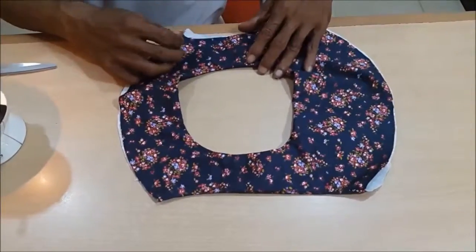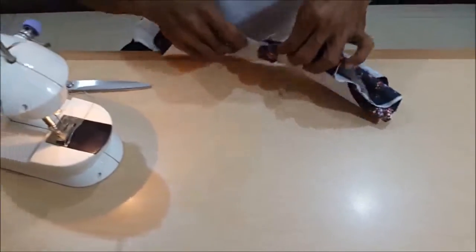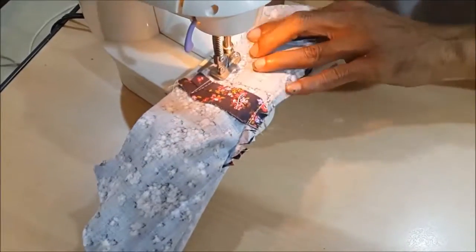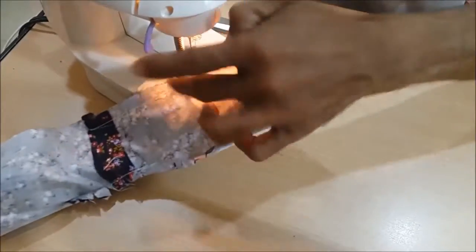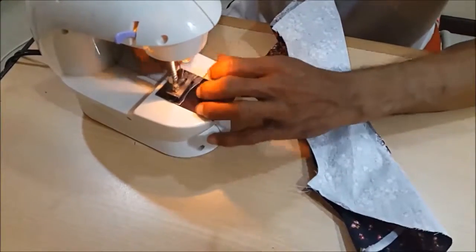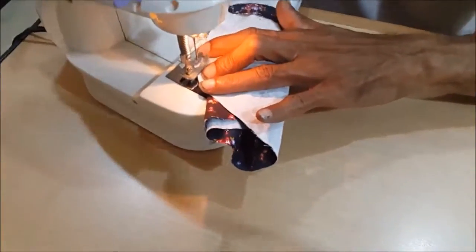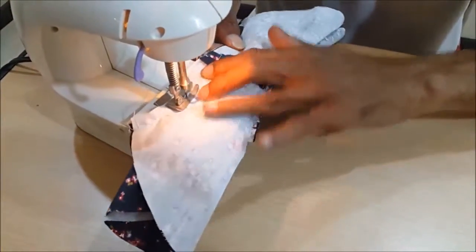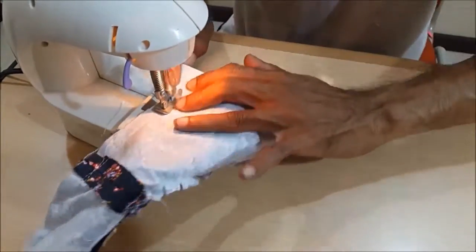Fold it and stitch it from the middle section. After that, stitch it as well from the left side to the middle point, then cut it a bit and reverse it as well.